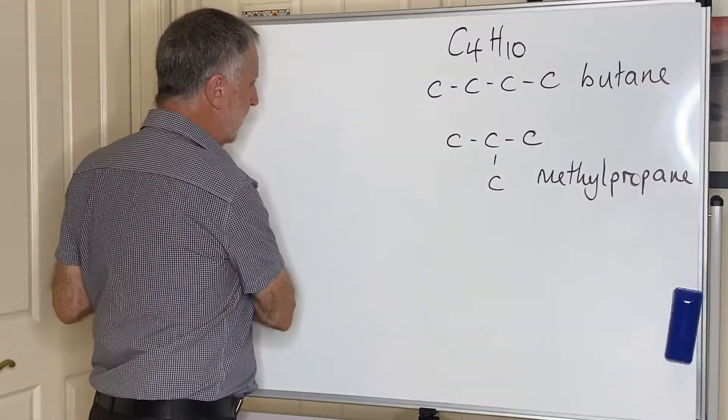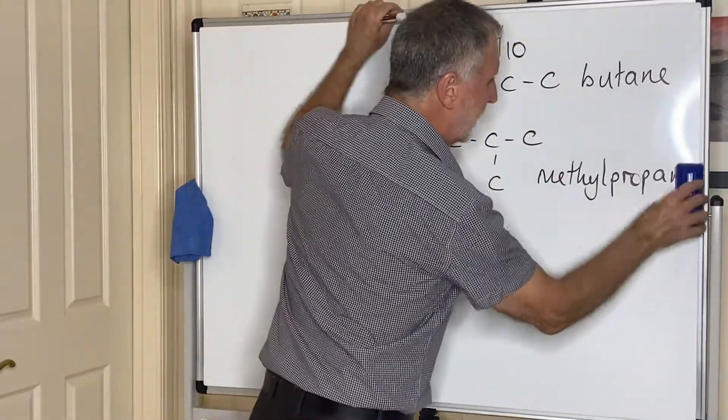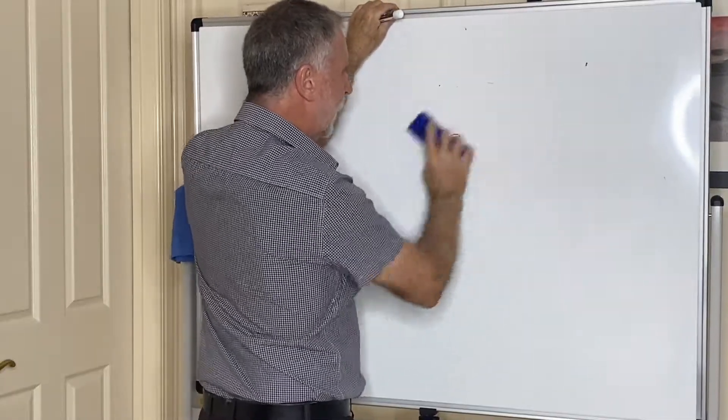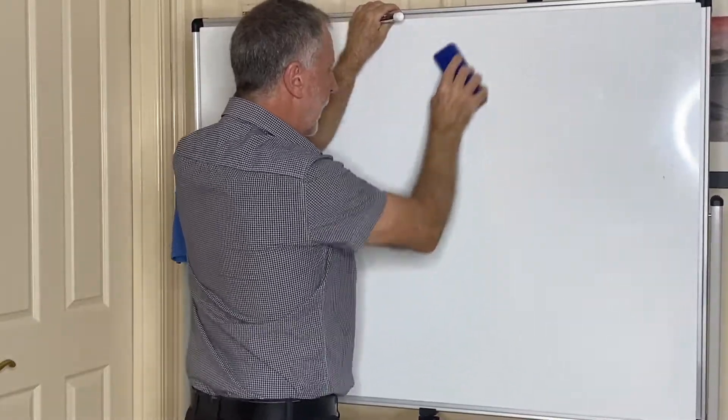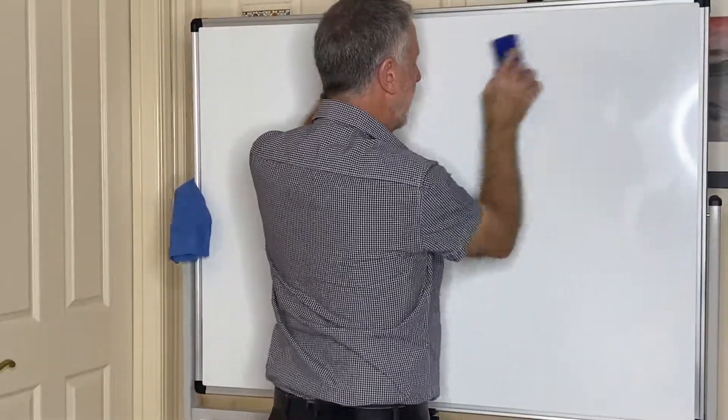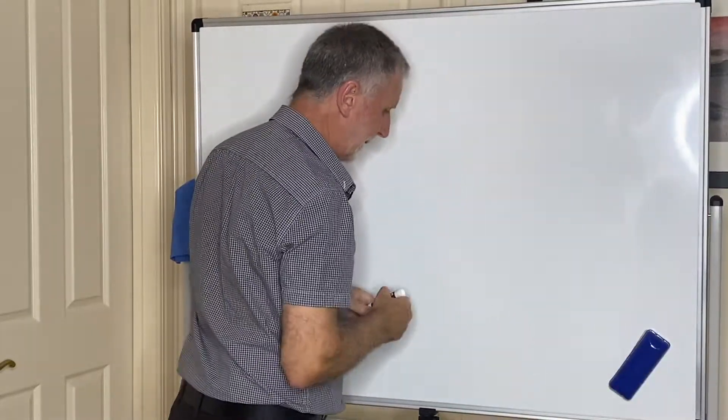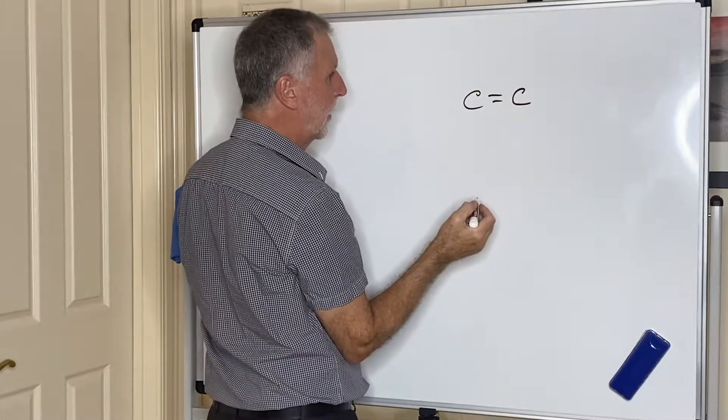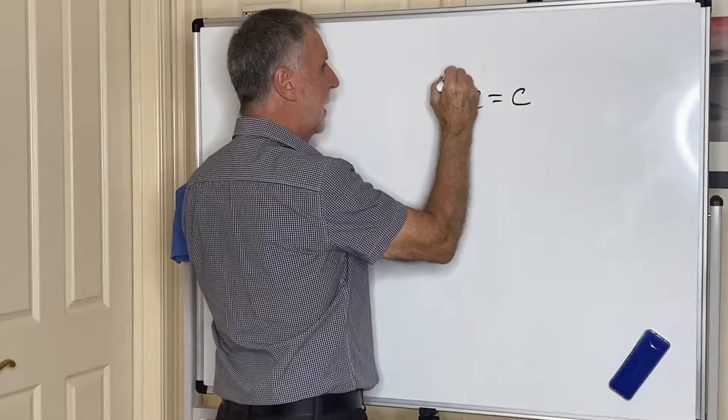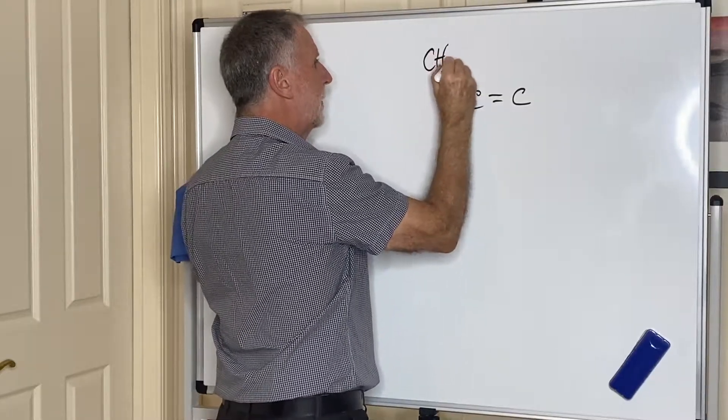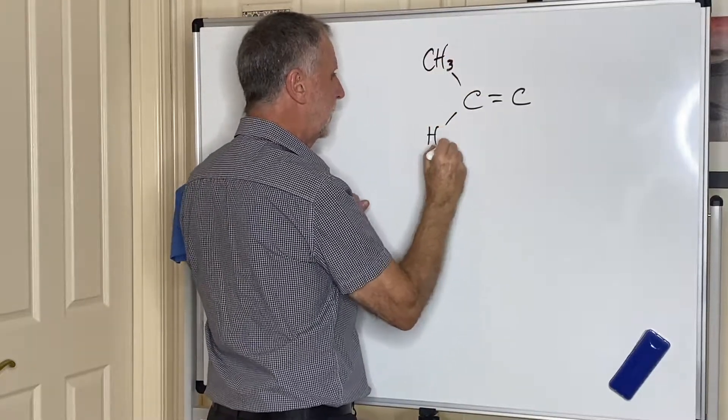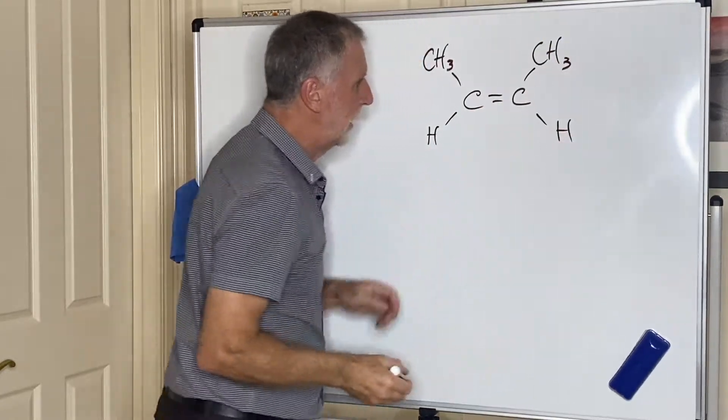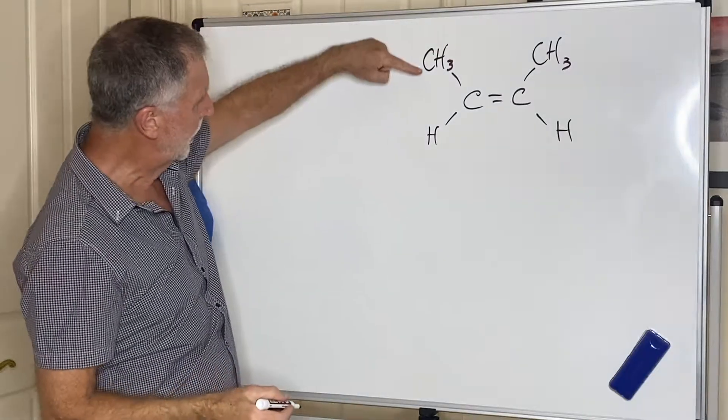Now these are all structural isomers. However, there is another kind of isomerism that you need to be aware of and that is called stereoisomerism. That will only occur where a bond cannot move. So let's say for argument's sake I had an alkene double bond, and let's say I had a CH3 there, an H there, and a CH3 there and H there. Now what I've just drawn is but-2-ene.